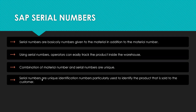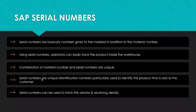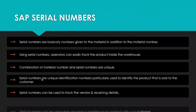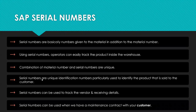Serial numbers are unique identification numbers particularly used to identify products sold to a customer. When you are doing goods issuing or goods receiving from any customer or vendor, you can identify the delivery with respect to the serial number. The serial number can also be used to track vendor and receiving details, and when you have a maintenance contract with a customer to identify which product was sent.